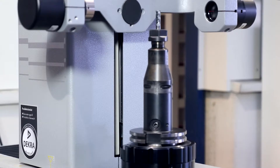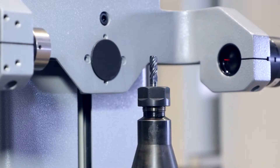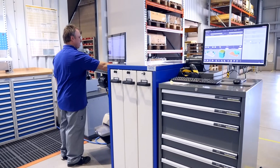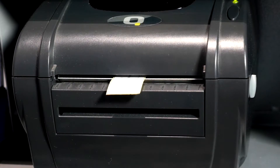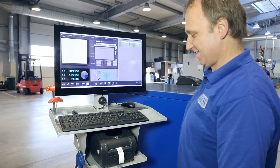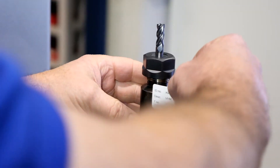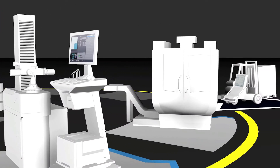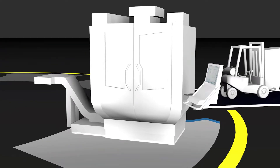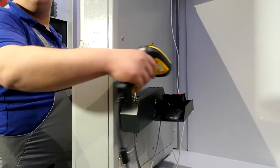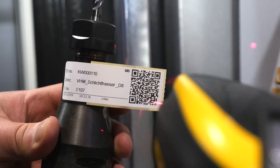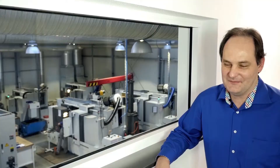The complete tools are then pre-setted and measured using the previously created setup sheet. A Zoller Zidcode label containing all measuring results is printed and put on the tool. On the machine, the code on the label is scanned with the Zoller Zidcode scanner. All tool data is entered into the correct fields automatically and without errors.